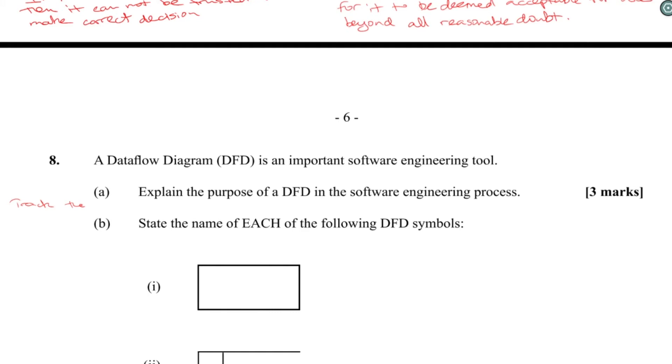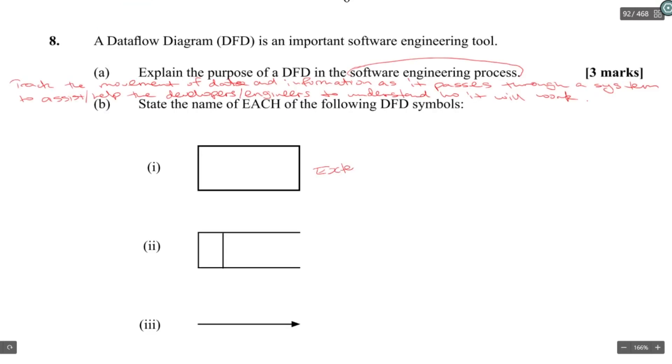But now we have to add in software engineering process stuff inside here. So it will be there to assist and help the developers and engineers to understand how it will work, or how it should work. Because the diagram will give a best-case scenario. All right, then each of these symbols. This is fairly straightforward.